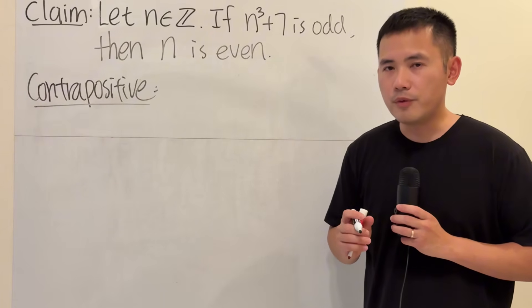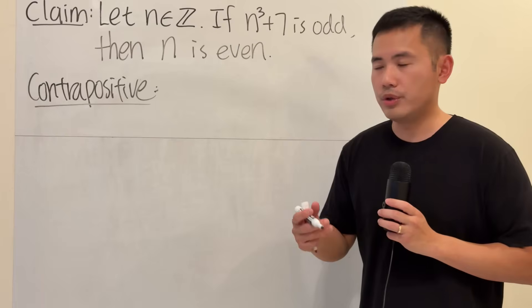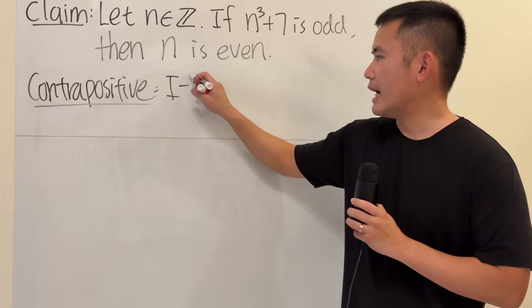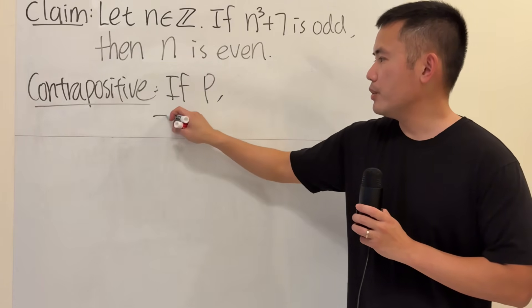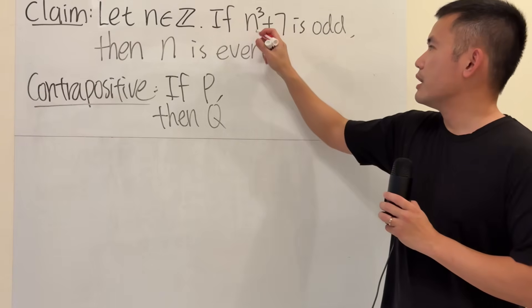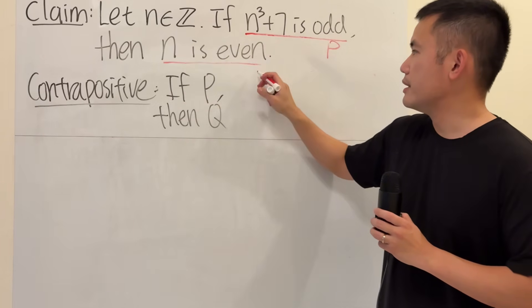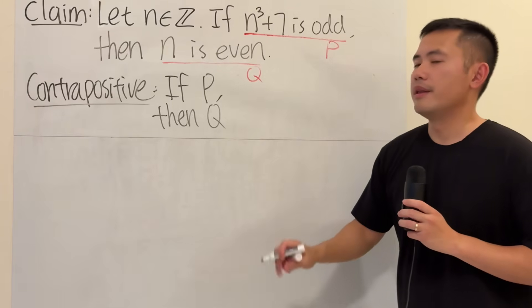Suppose we have an if-then statement form, and let's say the condition is p, and the conclusion is q. So, if we have if p, then q. So in our situation here, this right here is our p, and this right here is our q.